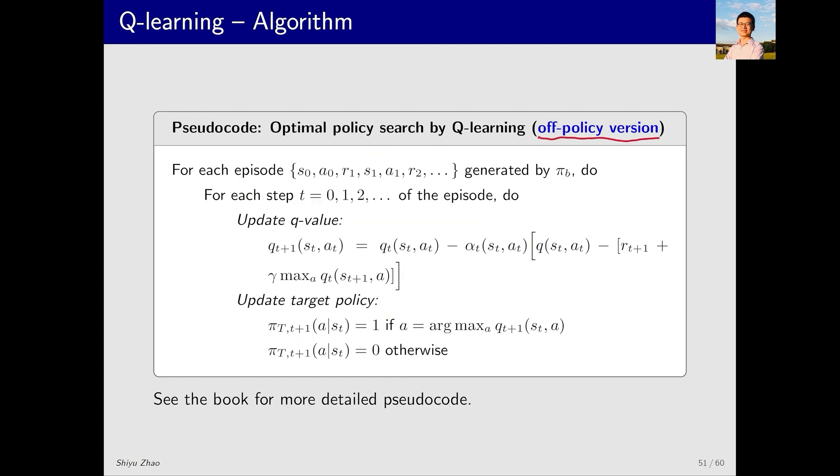For the off-policy implementation of Q-Learning, we assume there is a behavior policy π_B that generated some experienced samples. Our task is to find the optimal policy based on these experienced samples. Here's how it works. We pay attention to the corresponding status, actions and rewards we receive at time t. Update Q-value. This step is identical to the on-policy implementation and follows the standard Q-Learning algorithm.